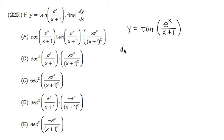And here is the key. You need to know what's the derivative of tangent, so we have to remember the table. Derivative of tangent is secant squared. So we are going to begin by writing this down as secant squared of the inside, which is e to the x over x plus 1, like that.